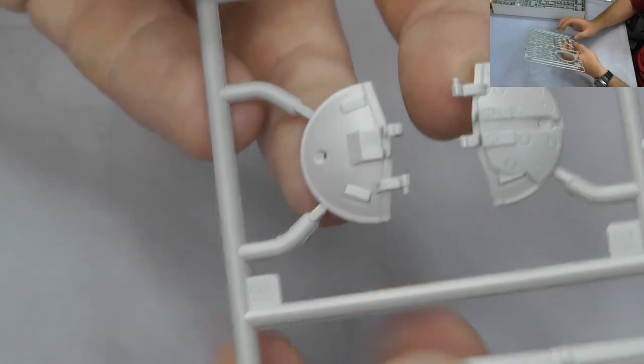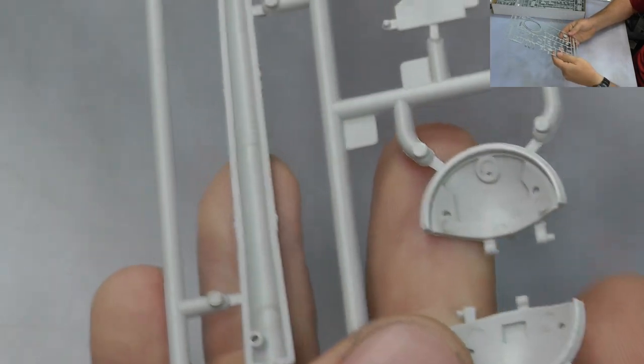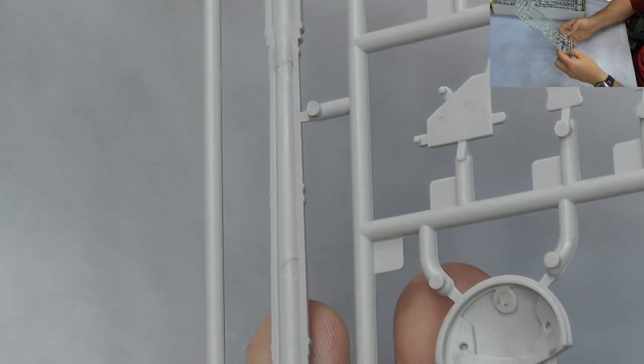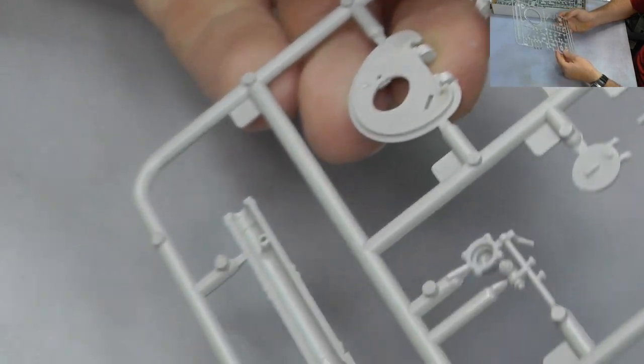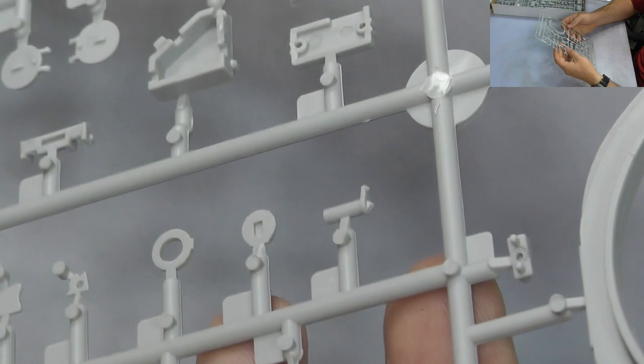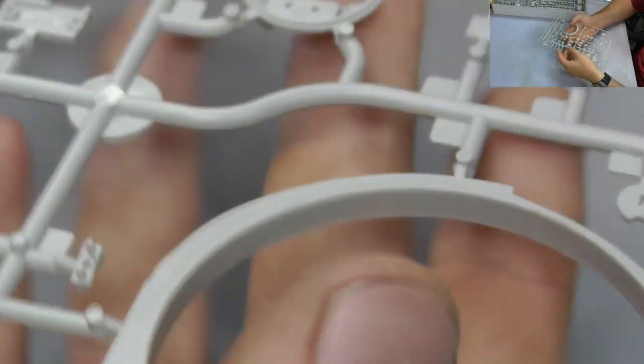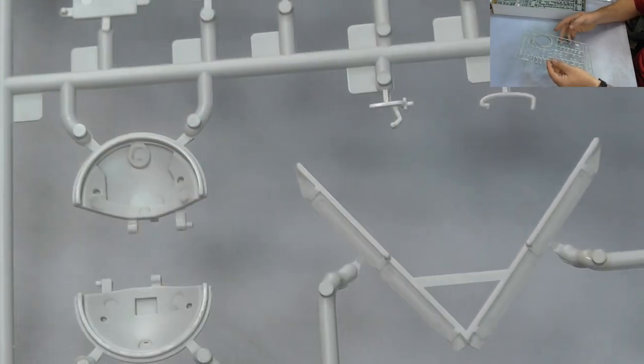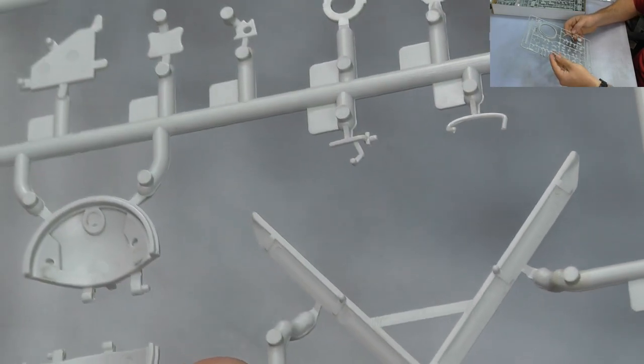We turn over the hatches, yes there are ejector pin marks inside there, so you're probably going to want to take care of them. However, in some cases like this one here, these two pieces go on the inside of there to cover up those ejector pin marks. That is rather cool.